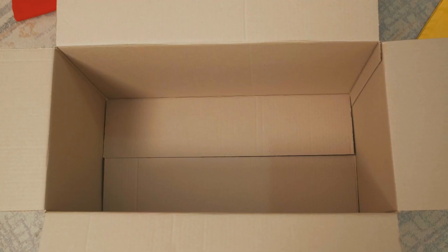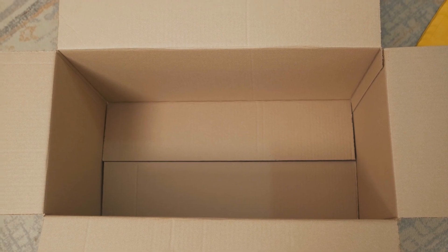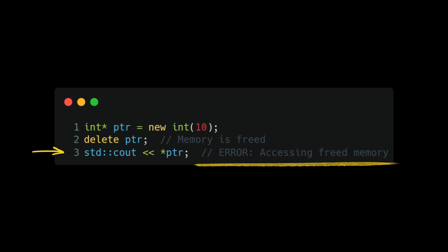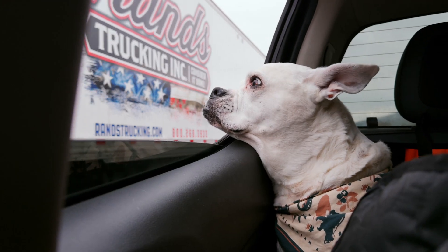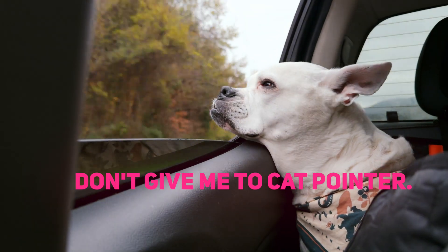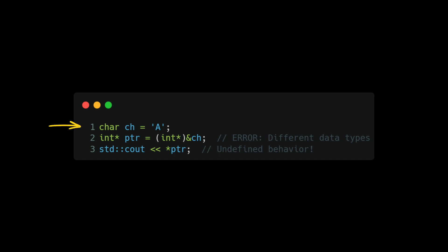Another risk is a dangling pointer — a pointer that references a memory location which has already been freed by garbage collection or manual memory management. In this example we define a pointer, delete it, and then try to access the freed memory through it, which gives an error. The next problem is pointer type mismatch: when the type of data you allocate to a pointer differs from the pointer's declared type, it leads to unexpected behavior.